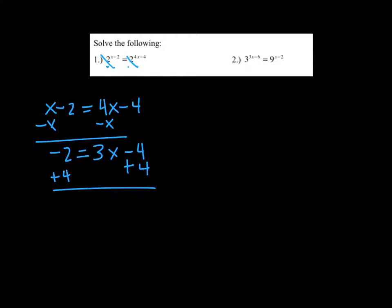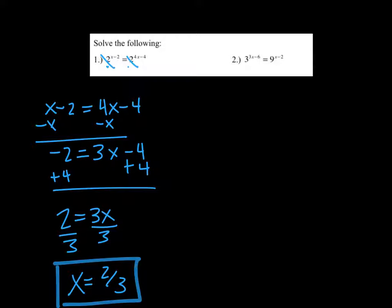So both of these are exponential equations. Now for the first part, this is what we were talking about when we said if the bases are the same, you can say that the exponents are equal to each other. So we can say x minus 2 equals 4x minus 4 and then just solve it like a normal equation. Subtract x over and add 4, so we get 2 equals 3x divided by 3. So x would equal 2 thirds. So when the bases are the same, you can equate the exponents or set the exponents equal to each other.